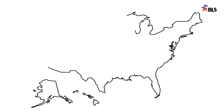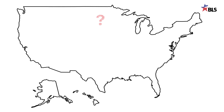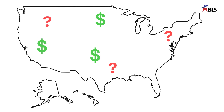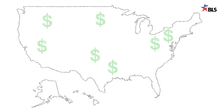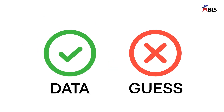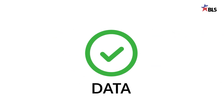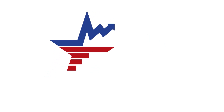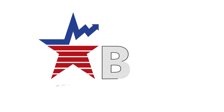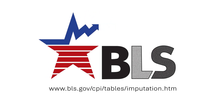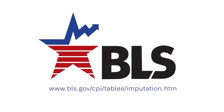BLS uses imputation to help capture price change when we cannot collect the actual price of the sampled product or service. It's important to remember that imputation is not just a guess — it uses the power of the data we have already collected to fill in missing data. To learn more about imputation and to see what types of imputation are being used each month in the CPI, check out the imputation page on BLS.gov. Thank you.